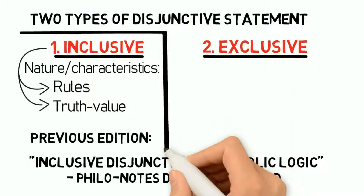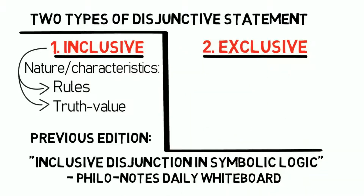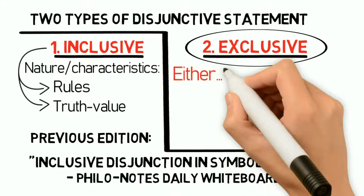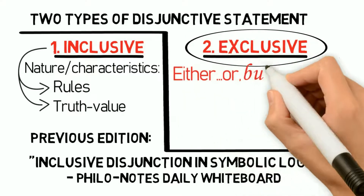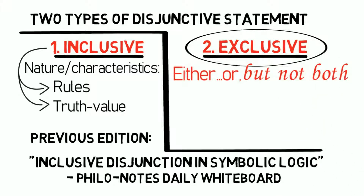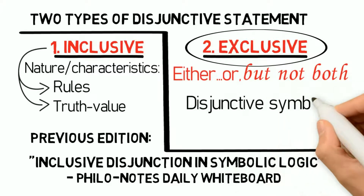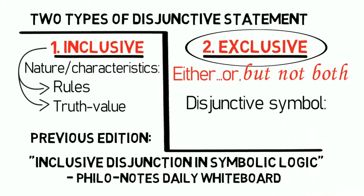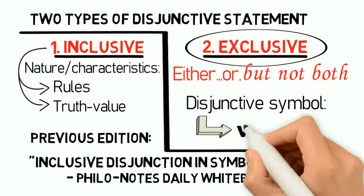All right, I believe that expectation is clear enough. Now let's proceed. An exclusive disjunction is a type of disjunction that is connected by the words 'either...or...but not both.' As we already know, the symbol for the connective of a disjunctive statement is the wedge.